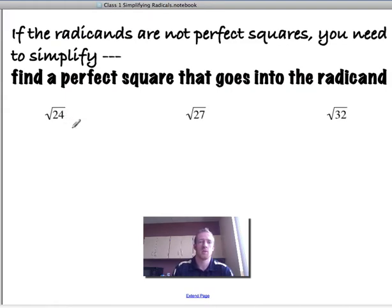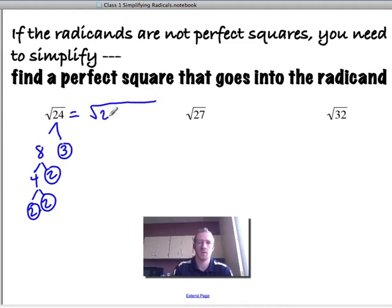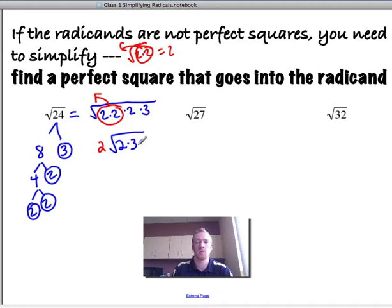So that gives us, 24 is 8 times 3. 8 is 4 times 2, and 4 is 2 times 2. Circle them, because sometimes these factor trees can get big. So this is the same thing as the square root of 2 times 2 times 2 times 3. Because we're doing square roots, every time you have a pair of numbers, you circle them and you take one out. We know that the square root of 2 times 2 is just 2. So circle a pair, take one out. That leaves us with a 2 on the outside, and we still got the square root of 2 times 3. I just simplify the 2 times 3 to a root 6. So there's my final answer.